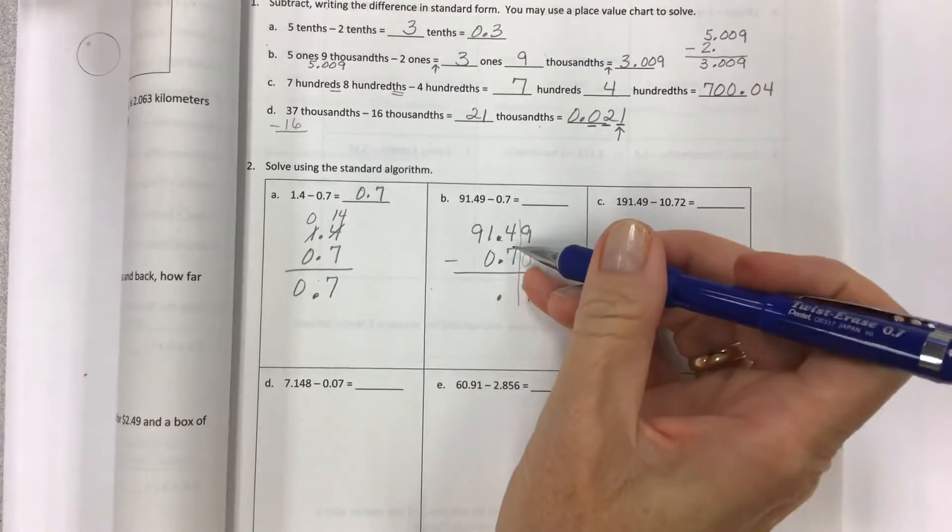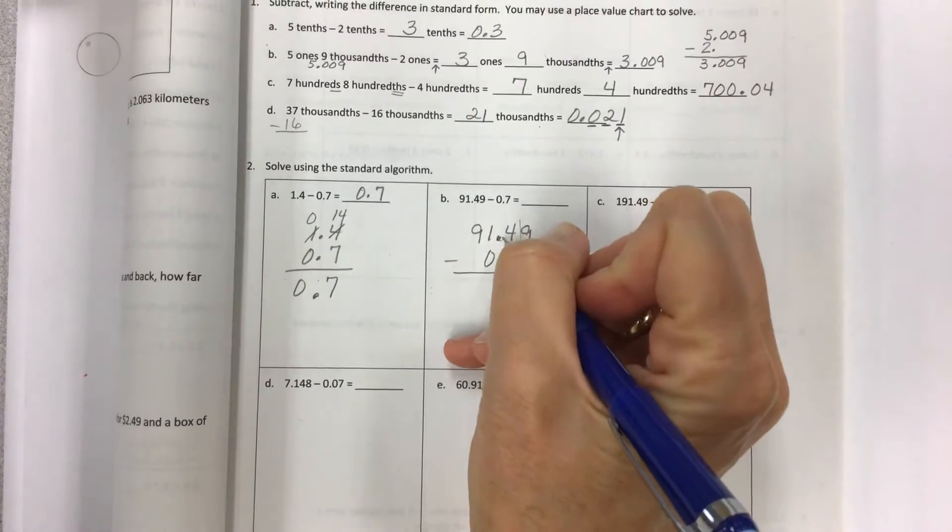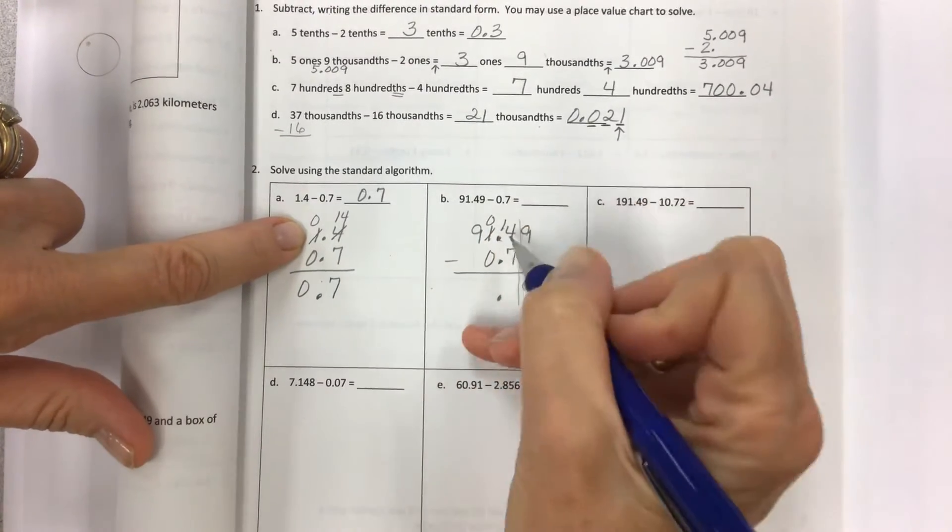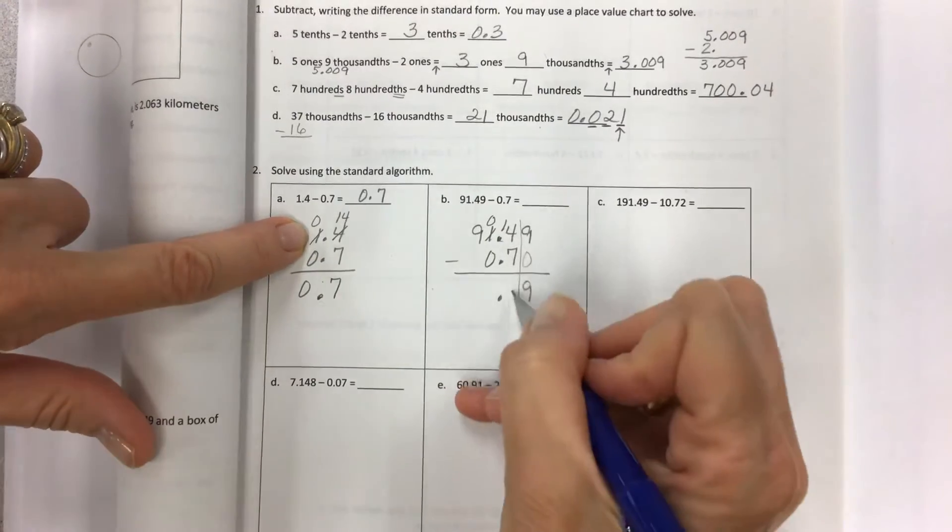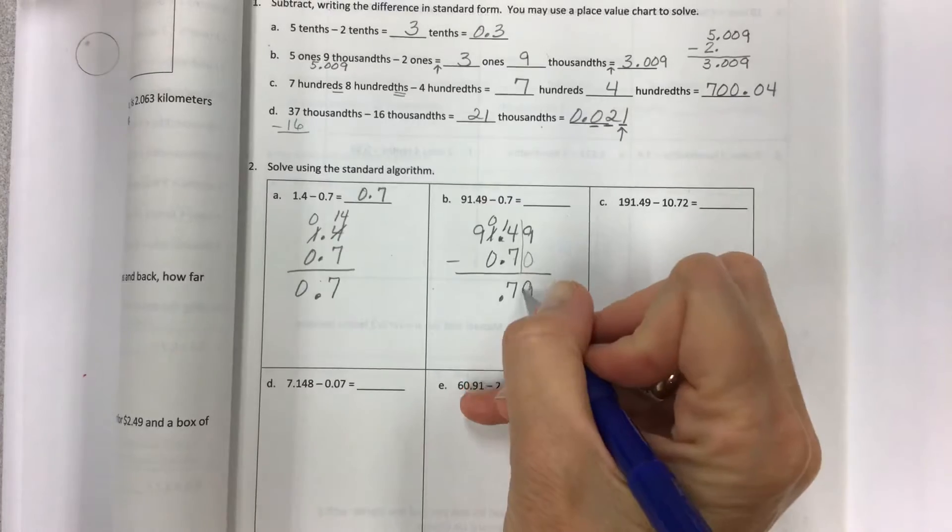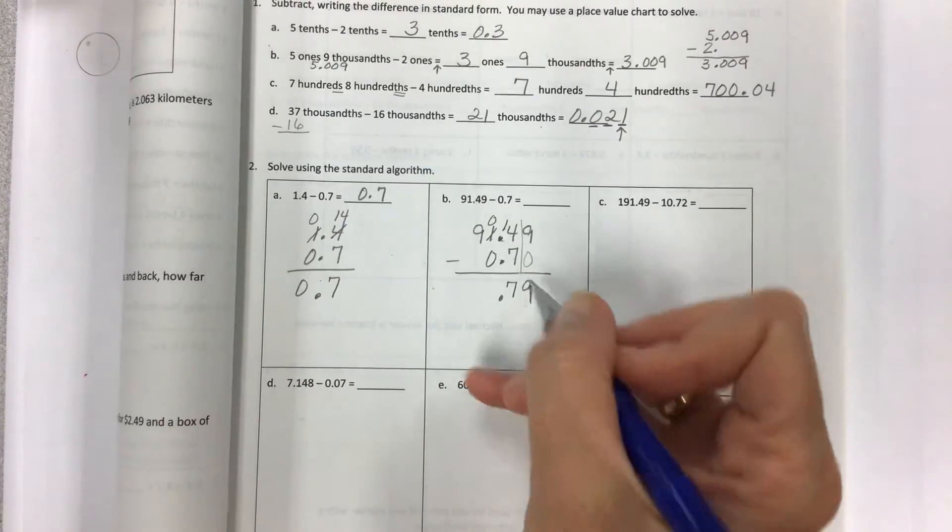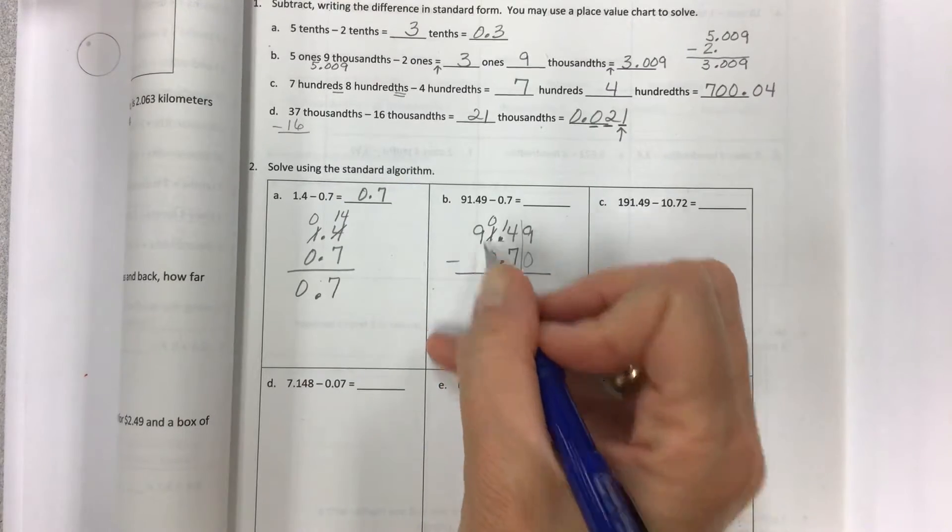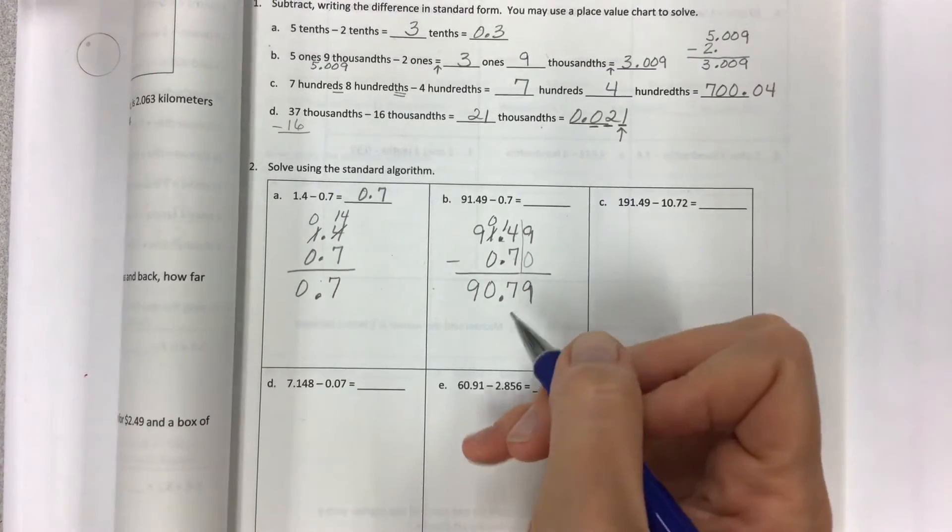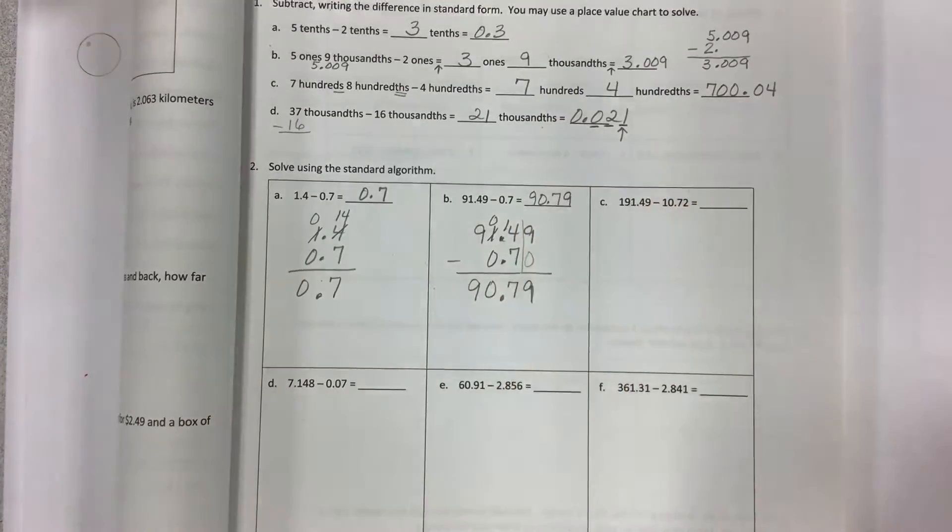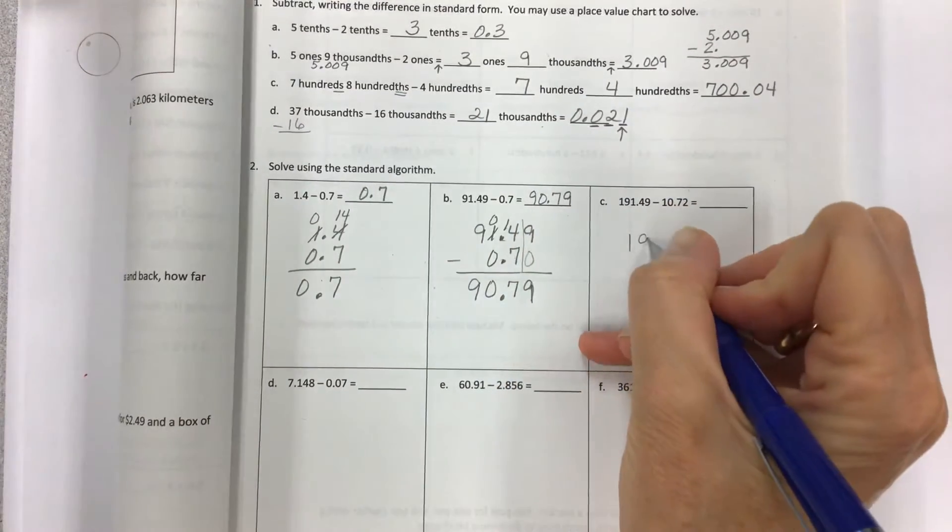Then you can start your subtraction if you have enough on the top to pull from. I could put a zero. 9 minus 0, 9. 4 minus 7, I don't have enough. I got to go here just like we did before. Take one, give ten. Now I have 14 minus 7 for 7. And then I have 0 minus 0 is 0 in the ones. 9 tens minus nothing.